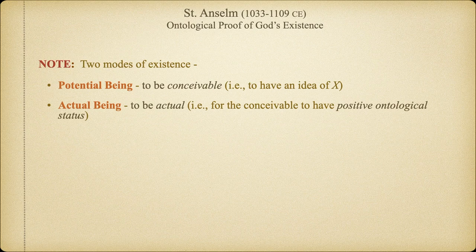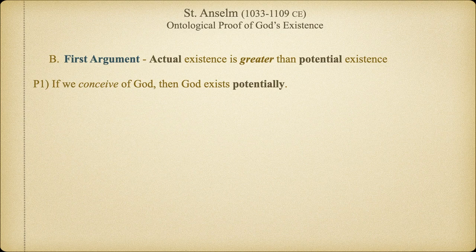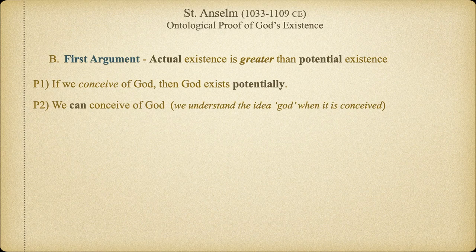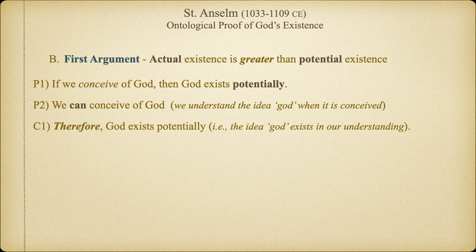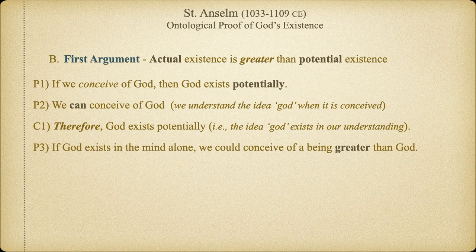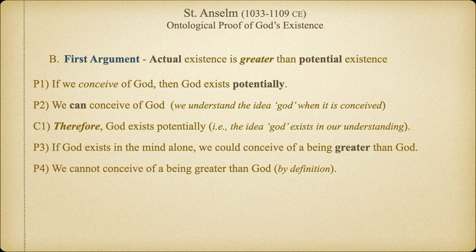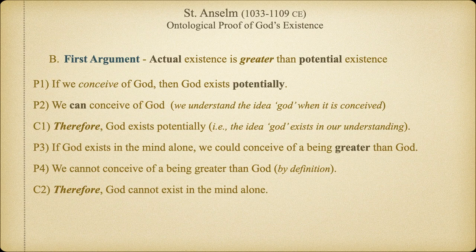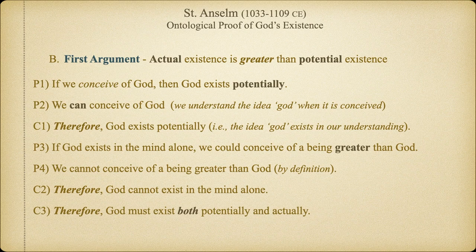Premise one: If we conceive of God, then God exists potentially. Premise two: We can conceive of God — that is, we understand the idea 'God' when it is conceived. Therefore, God exists potentially; that is, the idea of God exists in our mind or in our understanding. Premise three: If God exists in the mind alone, we could conceive of a being greater than God. Premise four: We cannot conceive of a being greater than God by definition. Therefore, God cannot exist in the mind alone as the atheist claims — God must exist both potentially and actually.